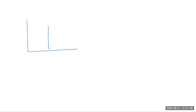Now let's discuss the graphs. We have a graph and a true value marked on it. If we have a narrow curve with a peak on the true value, it means our data is accurate and our measurements are close to each other — not spread far apart. So it is also precise.